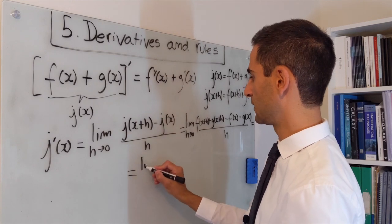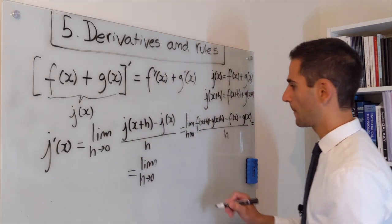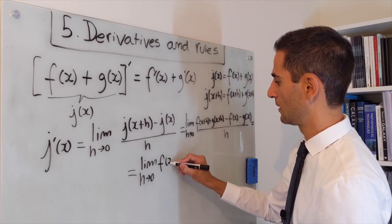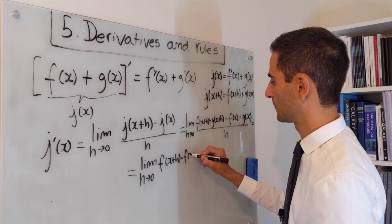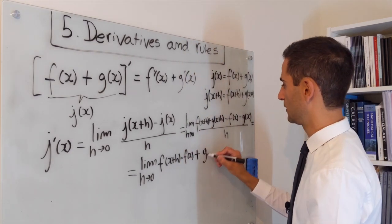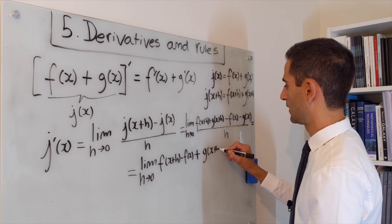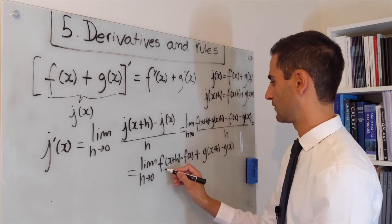So you can write this as the limit when h goes to zero of f of x plus h minus f of x plus g of x plus h minus g of x. And this is all divided by h.